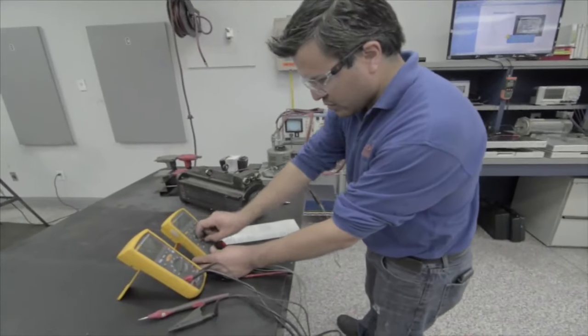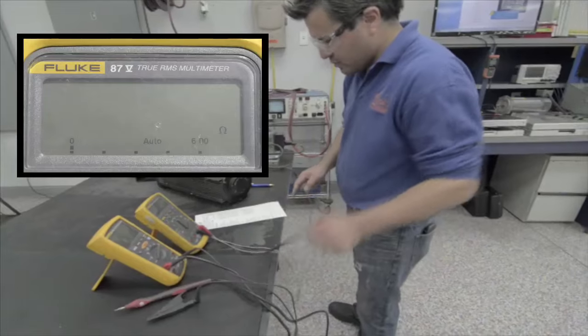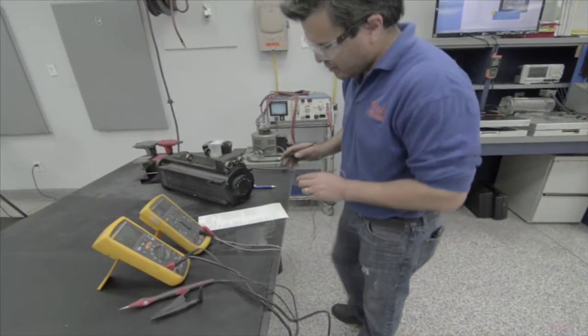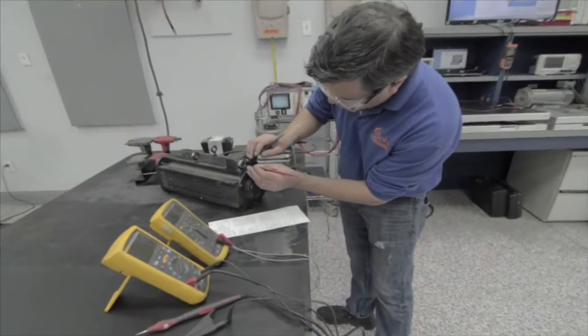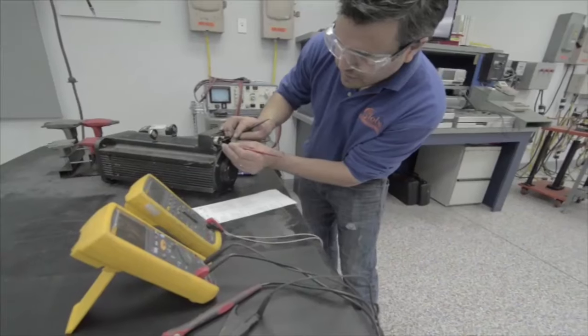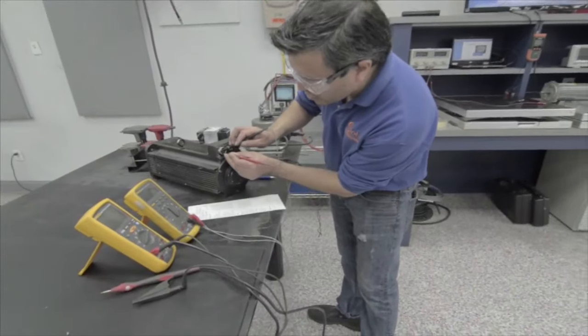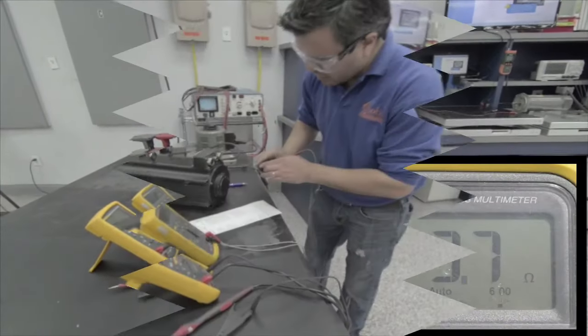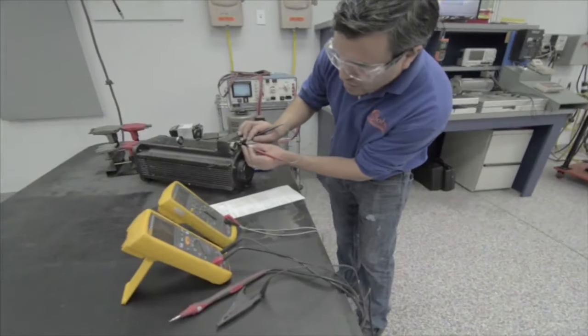A winding resistance phase balance test using a true RMS meter is now being done to check and make sure that the windings are balanced. Next, in between the phases, phase one to two, phase two to three, phase three to one, we'll also get a reading on the coil for the 24-volt brake. Looks good as well.